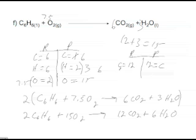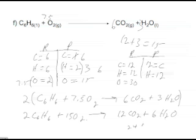On the reactant side, hydrogen is equal to 12 — 2 times 6 gives me 12. Hydrogen is equal to 12 on the product side as well — 6 times 2 gives me 12. Oxygen in this instance is equal to 15 times 2, which gives me 30. And then I have 12 times 2, which is 24, plus 6 oxygen, which gives me a total of 30. So oxygen is equal to 30, and oxygen is balanced as well. The equation is balanced.